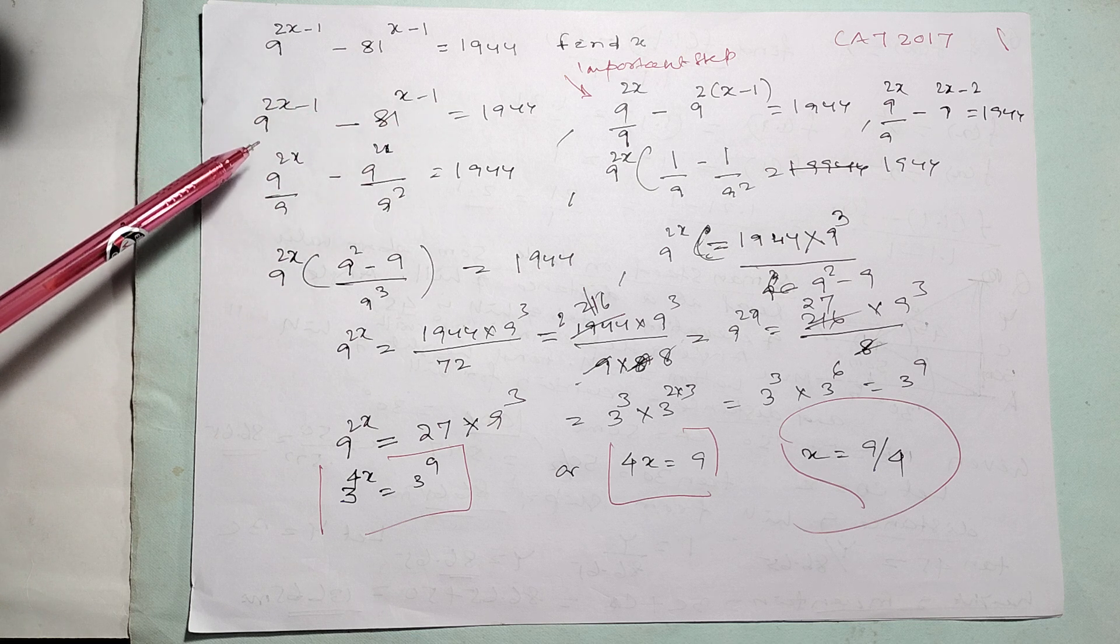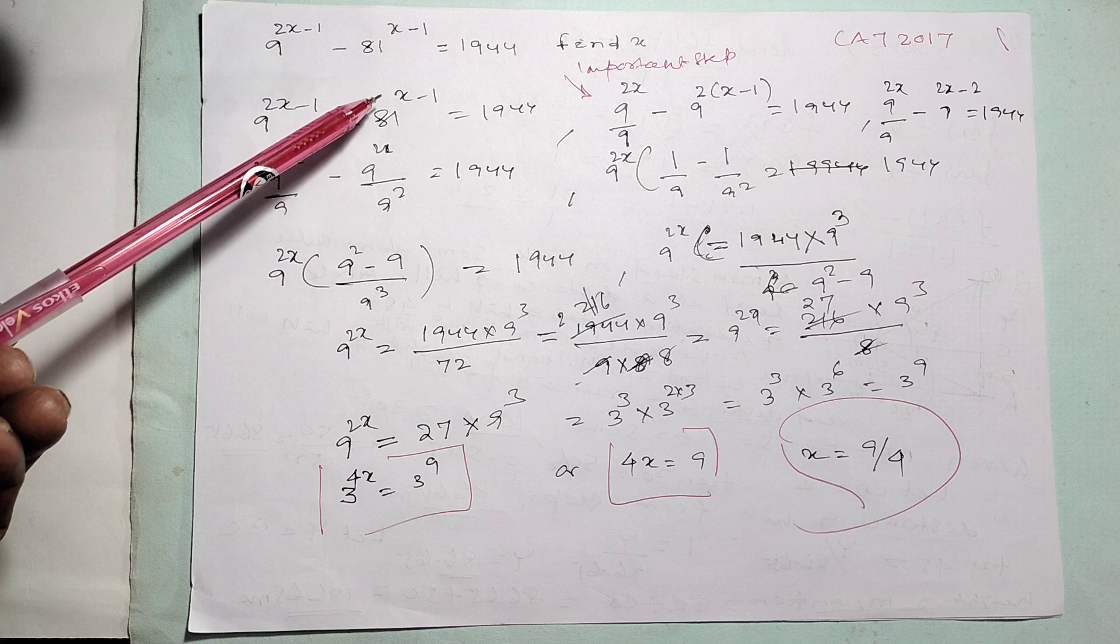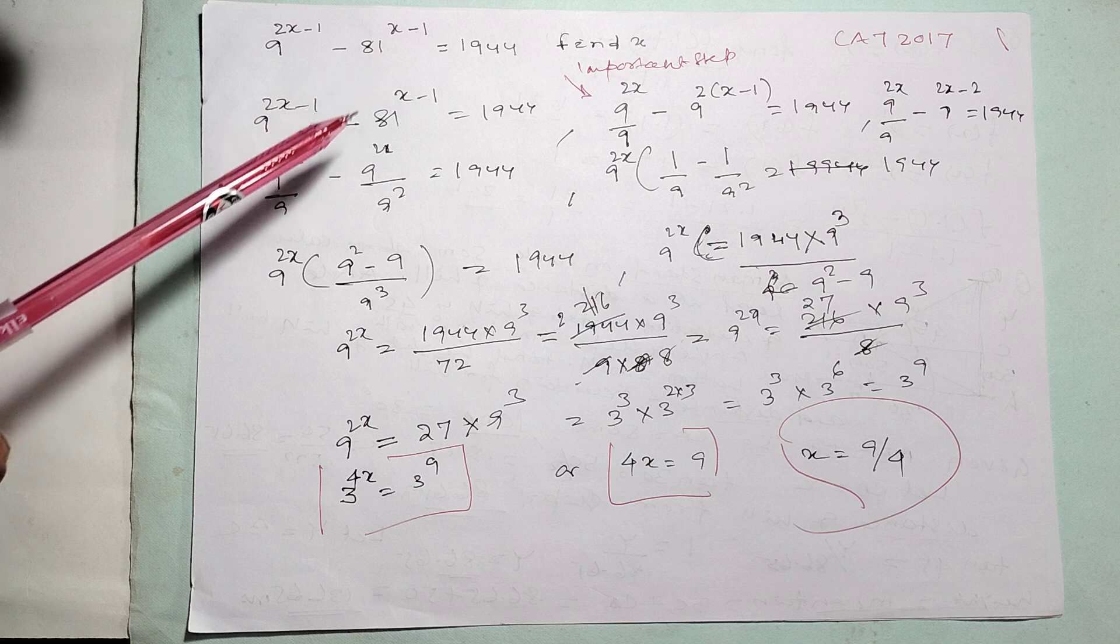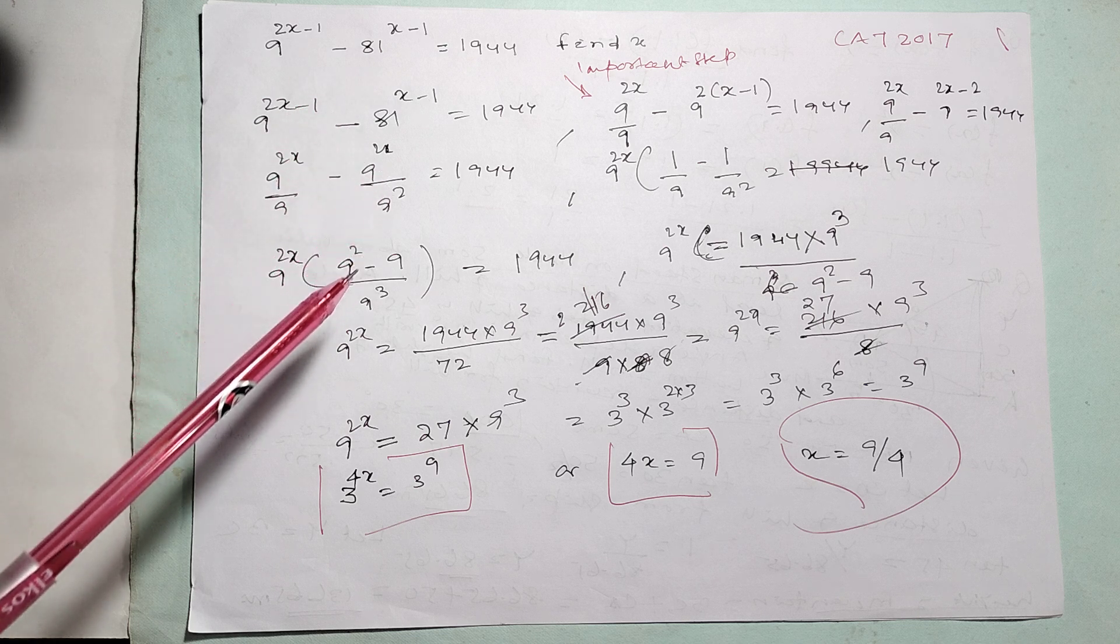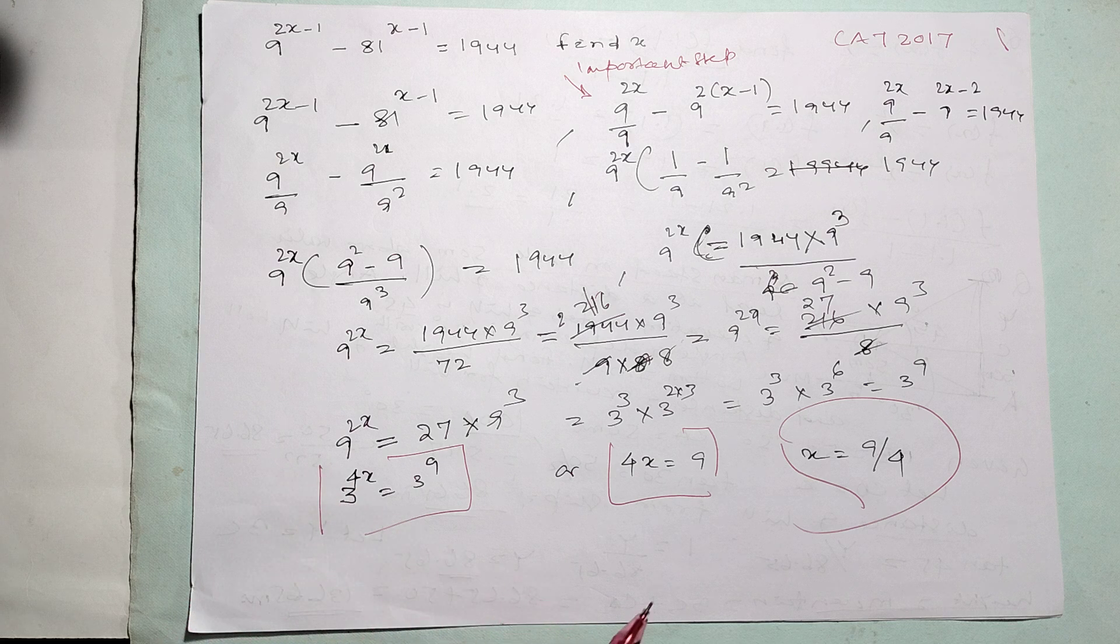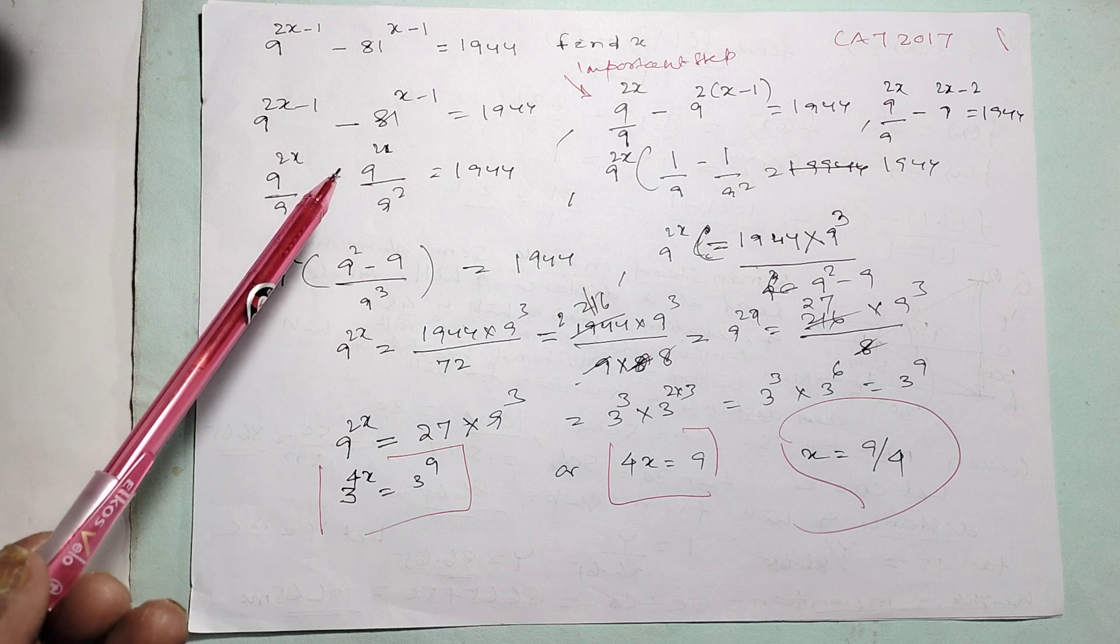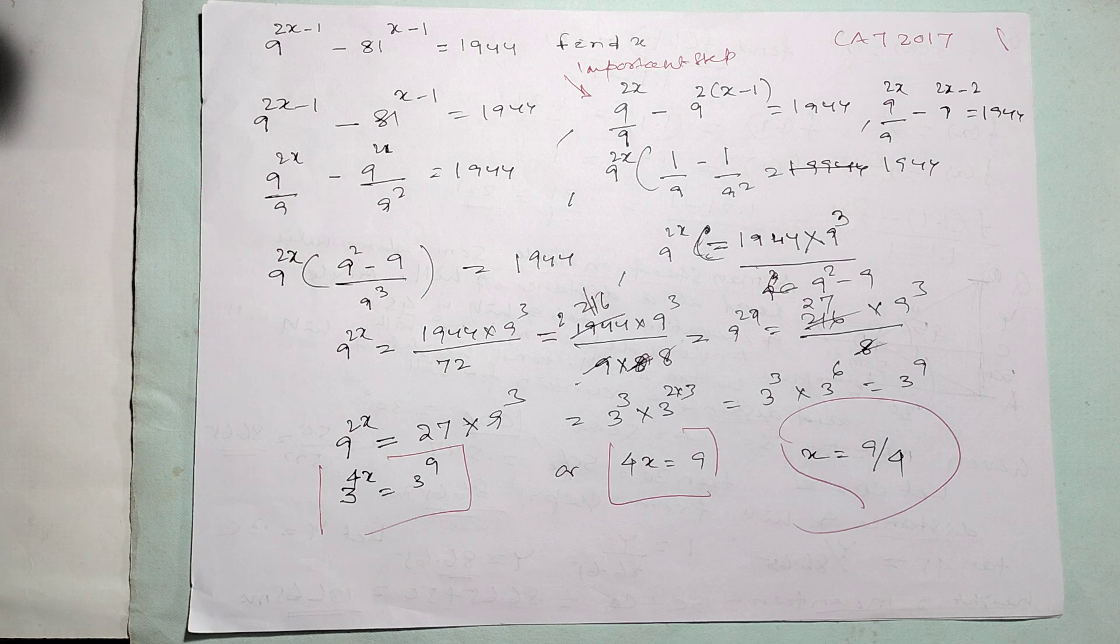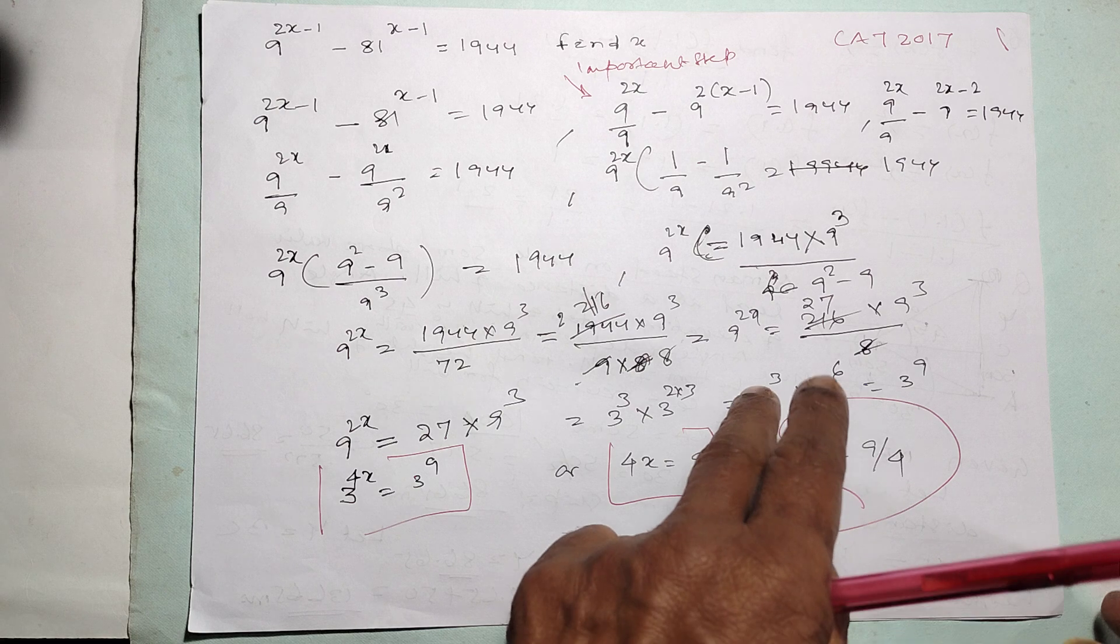9 to the power x minus 1 is equal to 9 to the power x by 9. Now, 81 to the power x minus 1 is equal to 9 to the power 2x divided by 9 square. After that, it is very easy. You can go on separate. 4x is coming 9, x is coming 9 by 4. Only this step. After that, all are very ordinary. The answer comes, x is equal to 9 by 4.